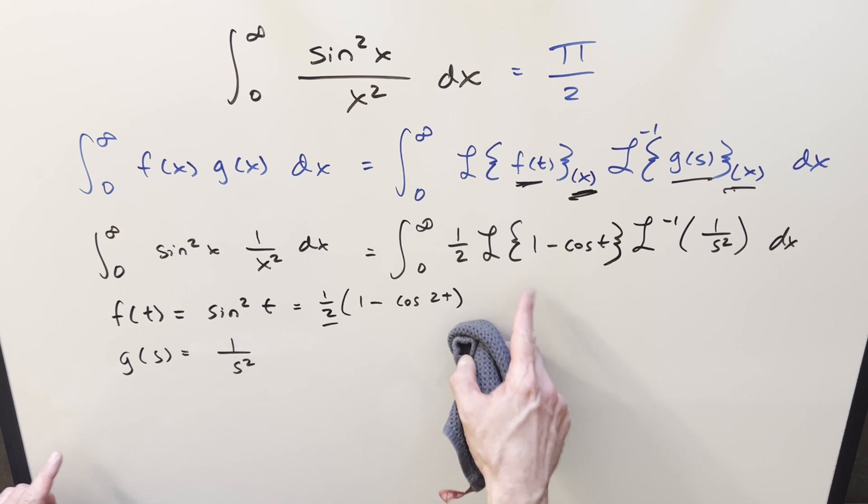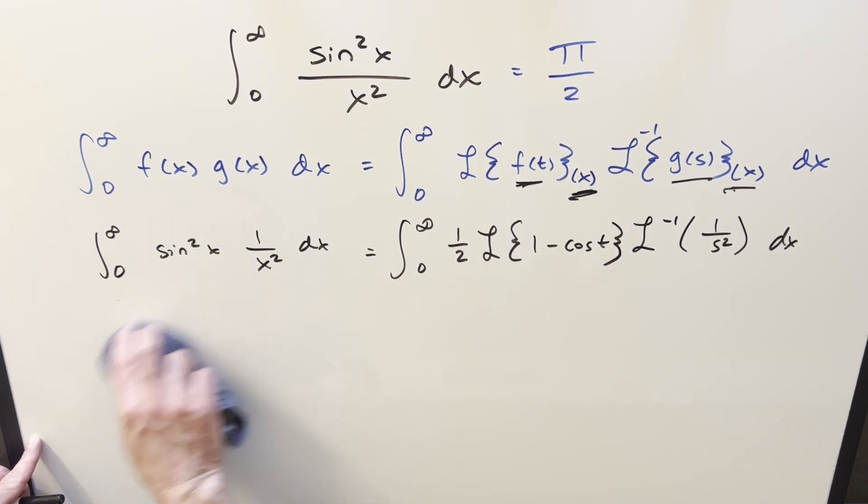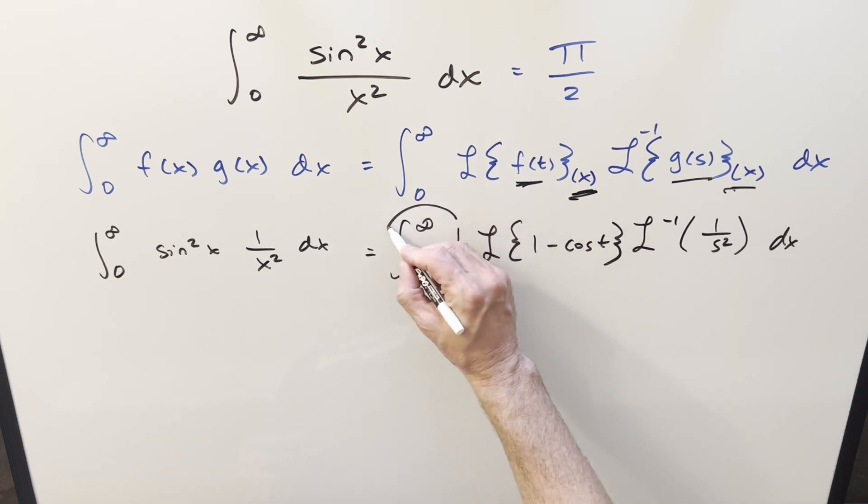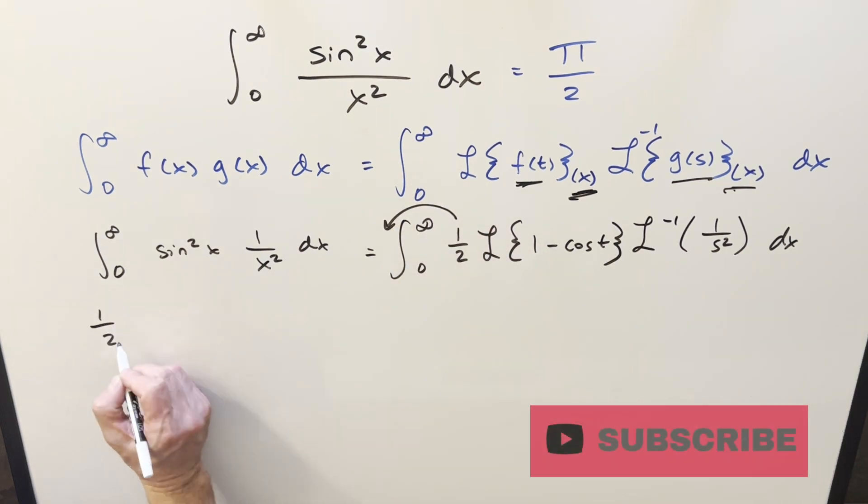So I think we can get rid of all this now that we have the integral that we want to solve here, and the Laplace transform stuff we need to do. So then from here, I can take the 1 half out front as a constant.